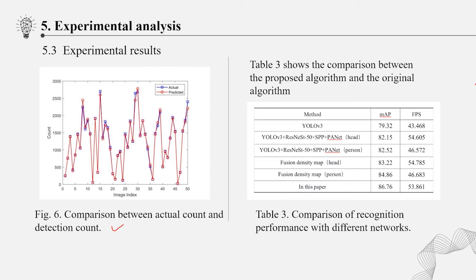It is observed from Figure 6 that the number of most people detection is close to the actual number. Table 3 shows the comparison between the proposed algorithm and the original algorithm as well as the comparison of improved model of original algorithm. It can be concluded from Table 3 that the detection accuracy of the original YOLOv3 model is